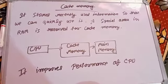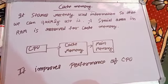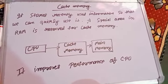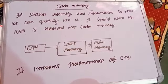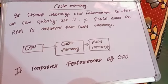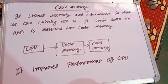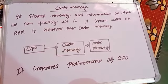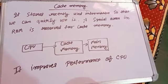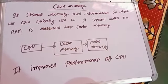Hello students, today I'm going to teach you about what is cache memory. You have seen in your mobile phone there is cache memory — it stores recently used information so that we can quickly use it. A special area in the RAM is reserved for cache memory. You can see I have made a diagram over here.